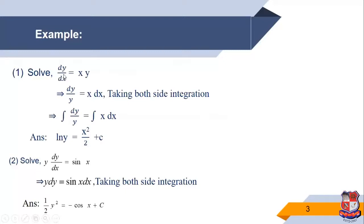For example, solve dy/dx = xy. This is a first order, first degree equation. So dy/dx = xy, which gives us dy/y = x dx. The left side depends only on y and the right side depends only on x, so we apply the variable separable method. Taking integration on both sides, we get log y = x²/2 + c. This is the required solution.